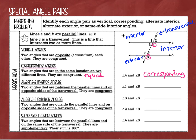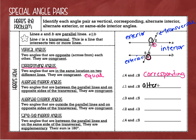Let's move on to angles 1 and 8. Now 1 and 8 are both exterior angles — they're both not in between the parallel lines, they are outside the parallel lines. They are also on opposite sides of the transversal: angle 1 is on the left side and angle 8 is on the right side. So these are called alternate exterior angles.